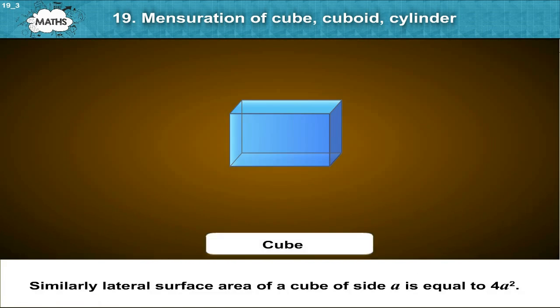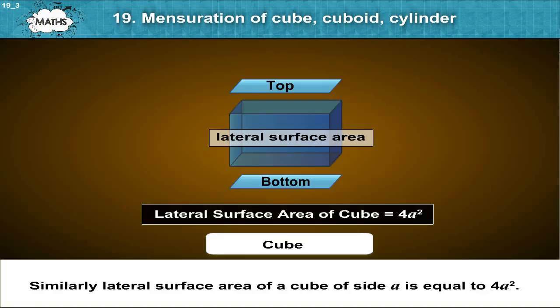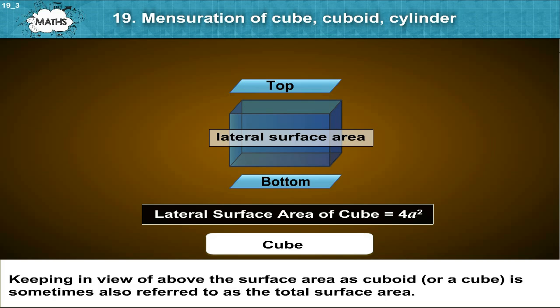Similarly, lateral surface area of a cube of side a is equal to 4a squared. Keeping in view of above, the surface area of cuboid or a cube is sometimes also referred to as the total surface area.